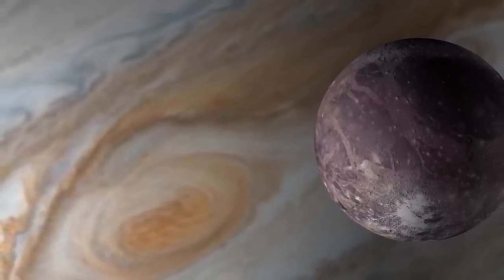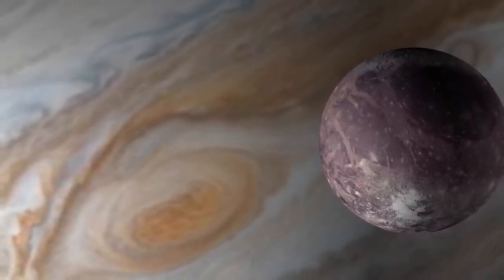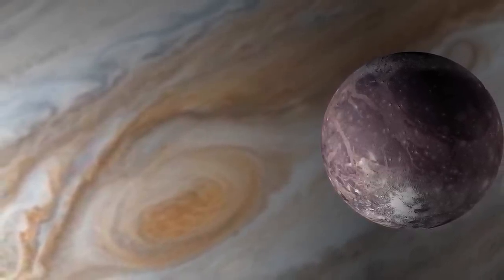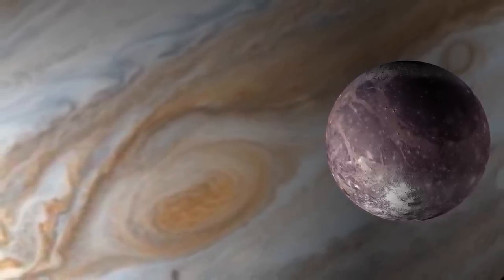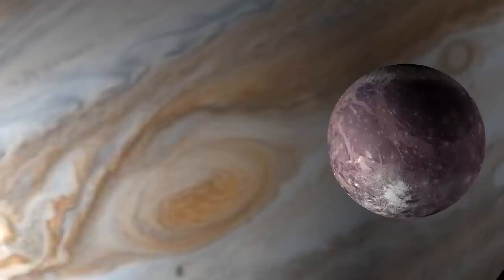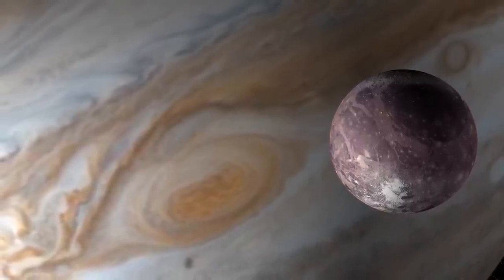This moon, which goes around Jupiter in 7 days, is composed of silicate and ice. It contains a liquid iron core, whose volume is greater than the volume of water contained by our planet Earth. The convection of this liquid core provides a magnetic field to this huge Galilean moon.